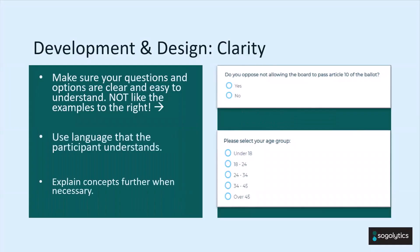The last point in development and design is clarity — the importance of making sure your questions and answer choices are clear. For the top question shown on the right-hand side, if you're referencing an article, it's perfectly acceptable to include a link above that question. You can also add a screenshot or include the article through our descriptive text question type, placed right above it so participants can easily reference what you're referring to.